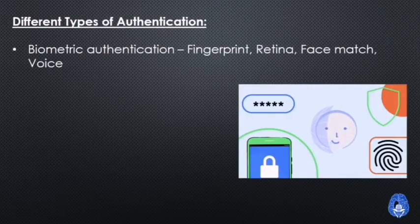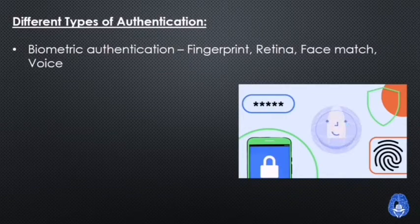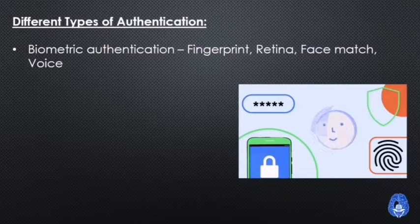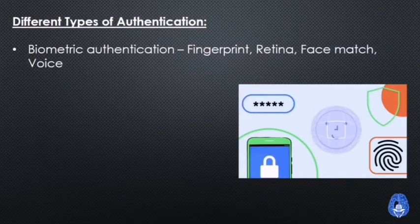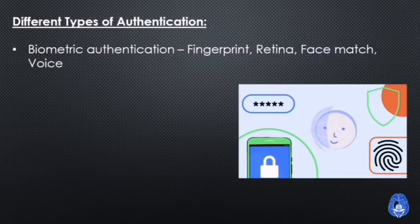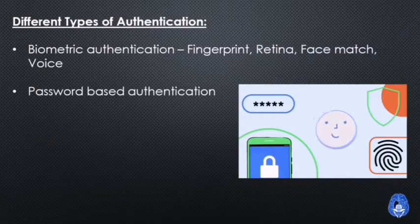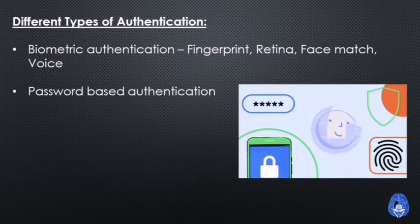Now let's look at the different types of authentication. First is biometric authentication — this corresponds to the second factor, something the user is. It includes fingerprint scanning, retina scanning, face matching, and voice matching. These are widely used today, for example face unlock on mobile phones.